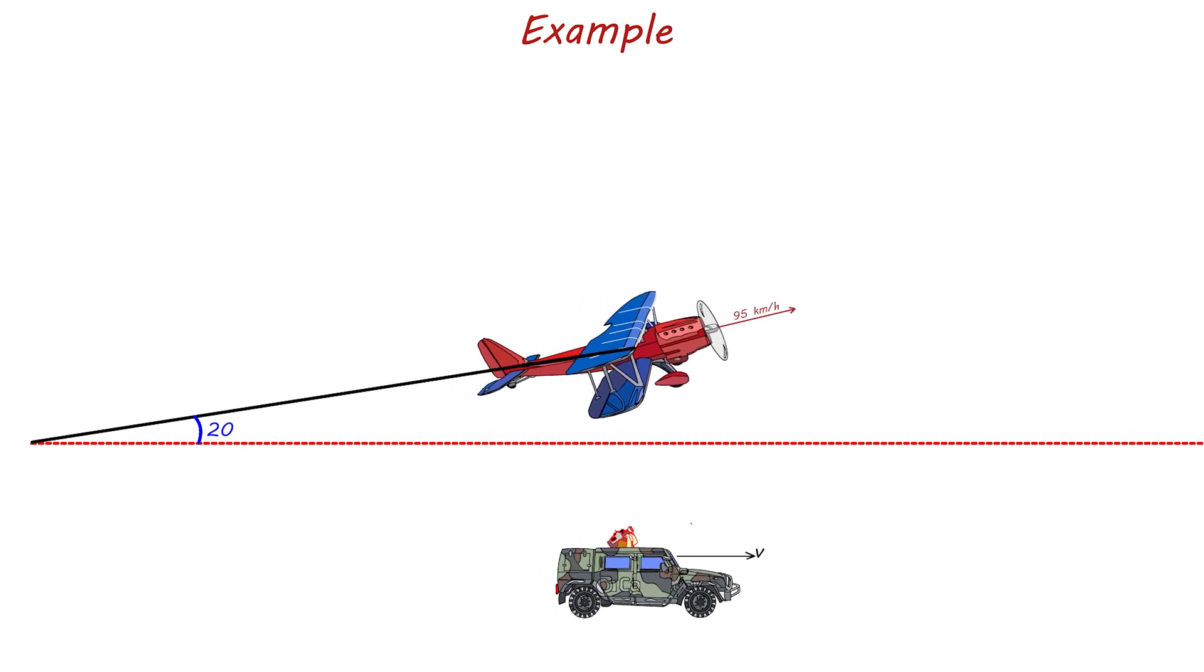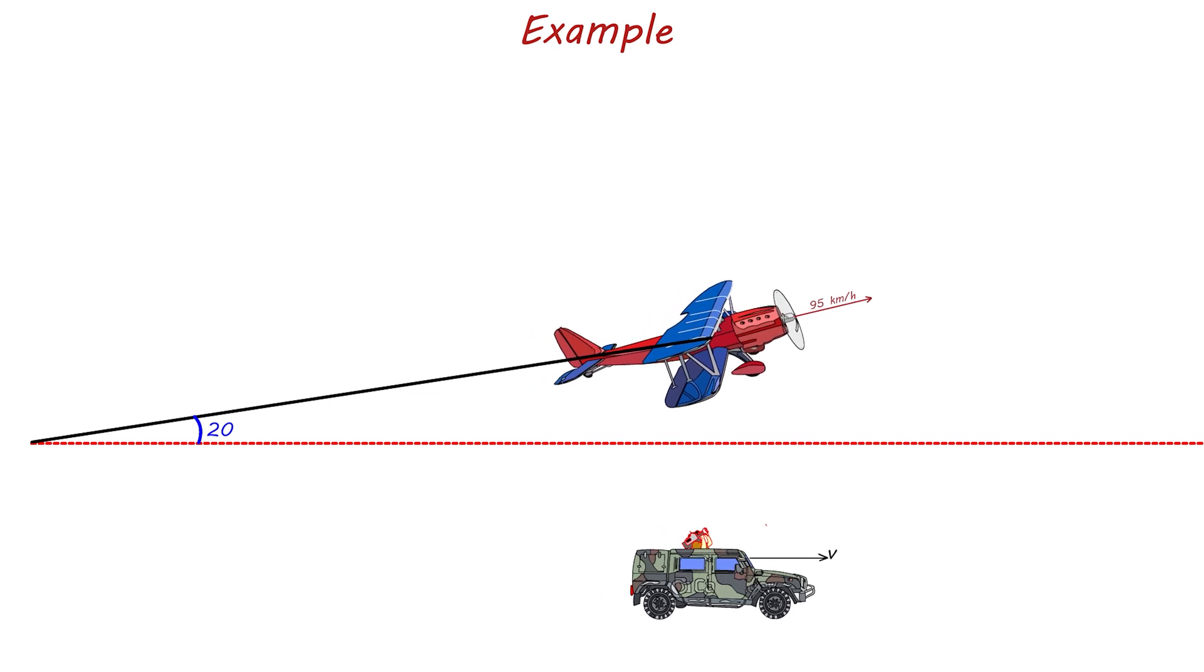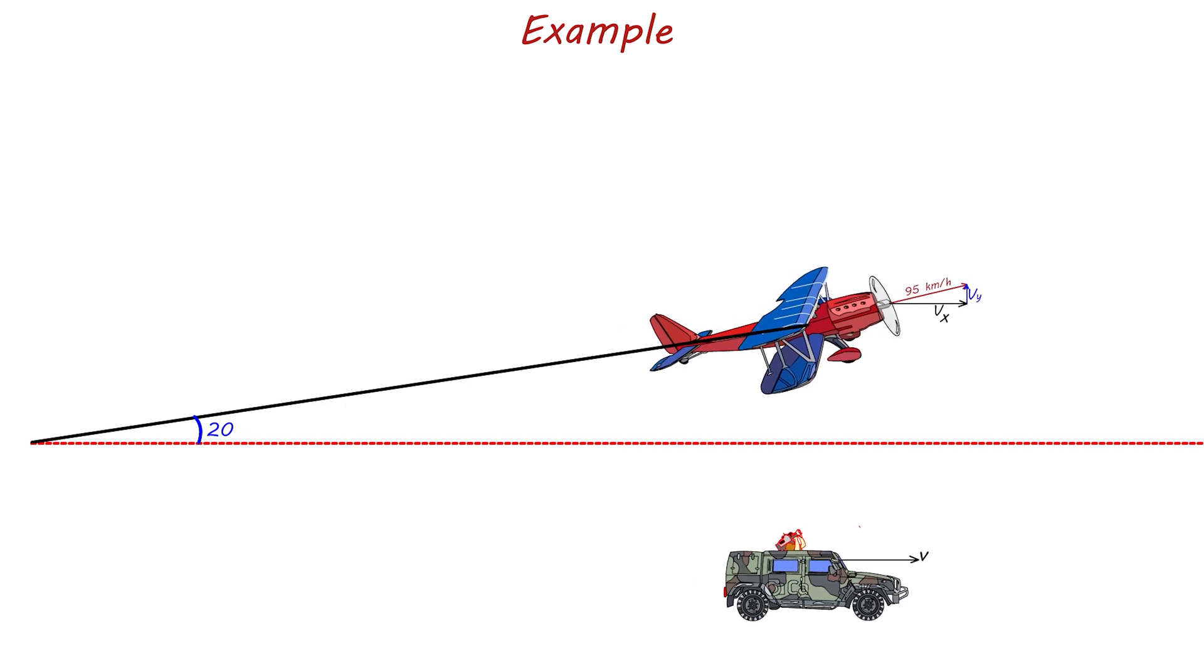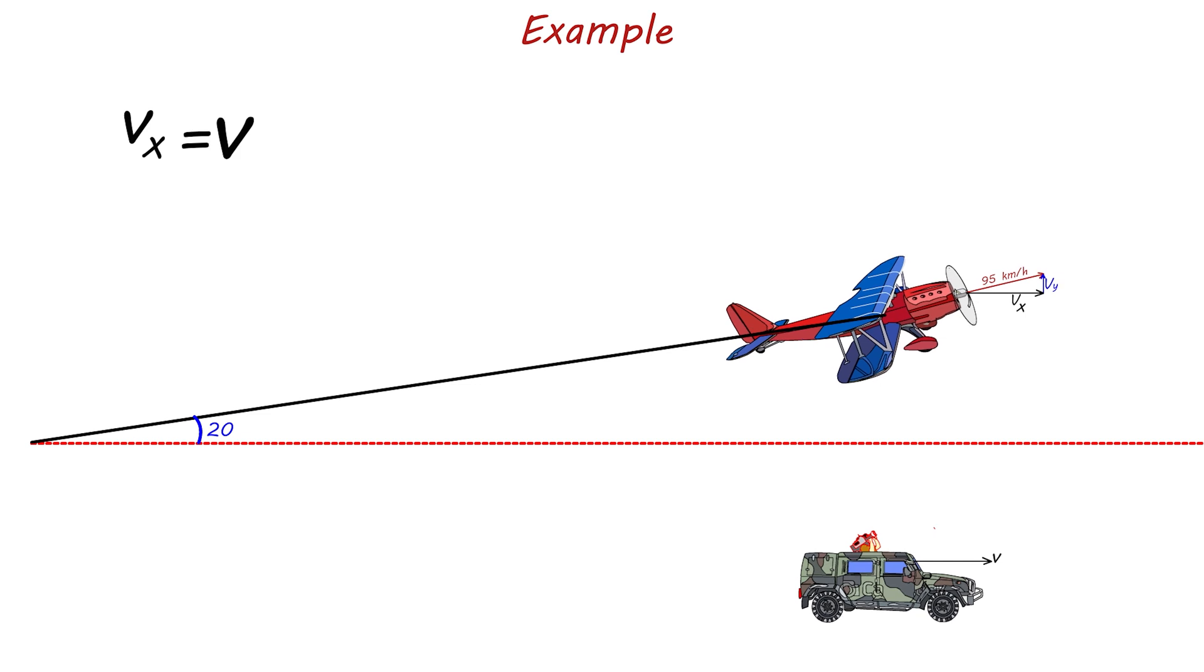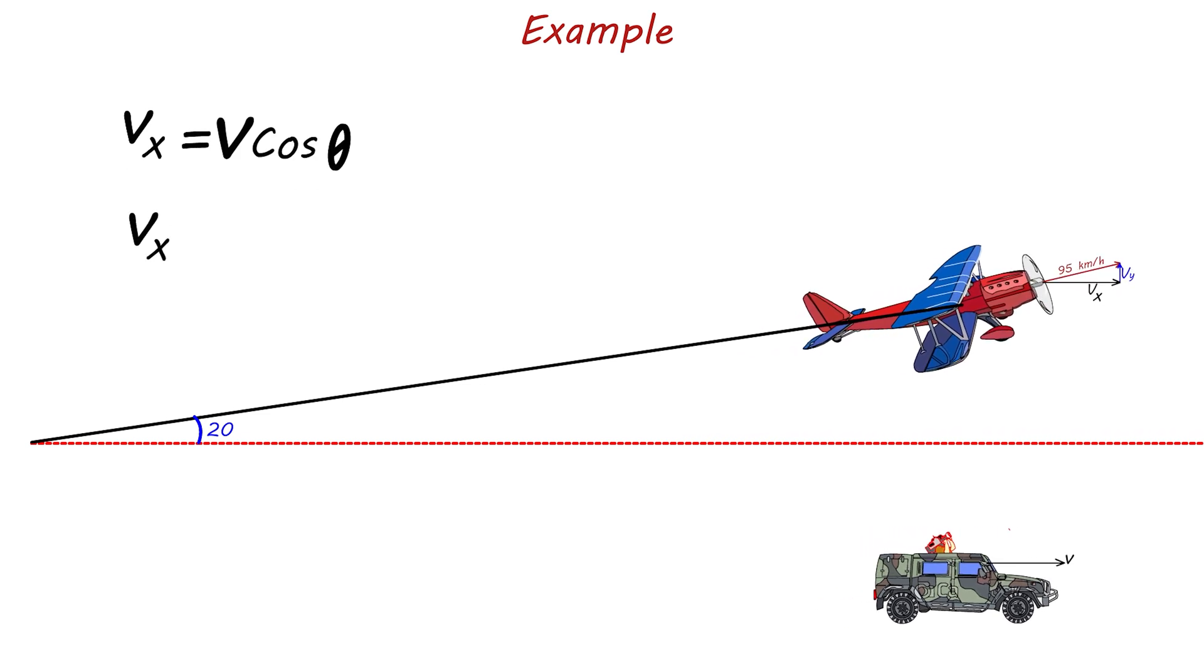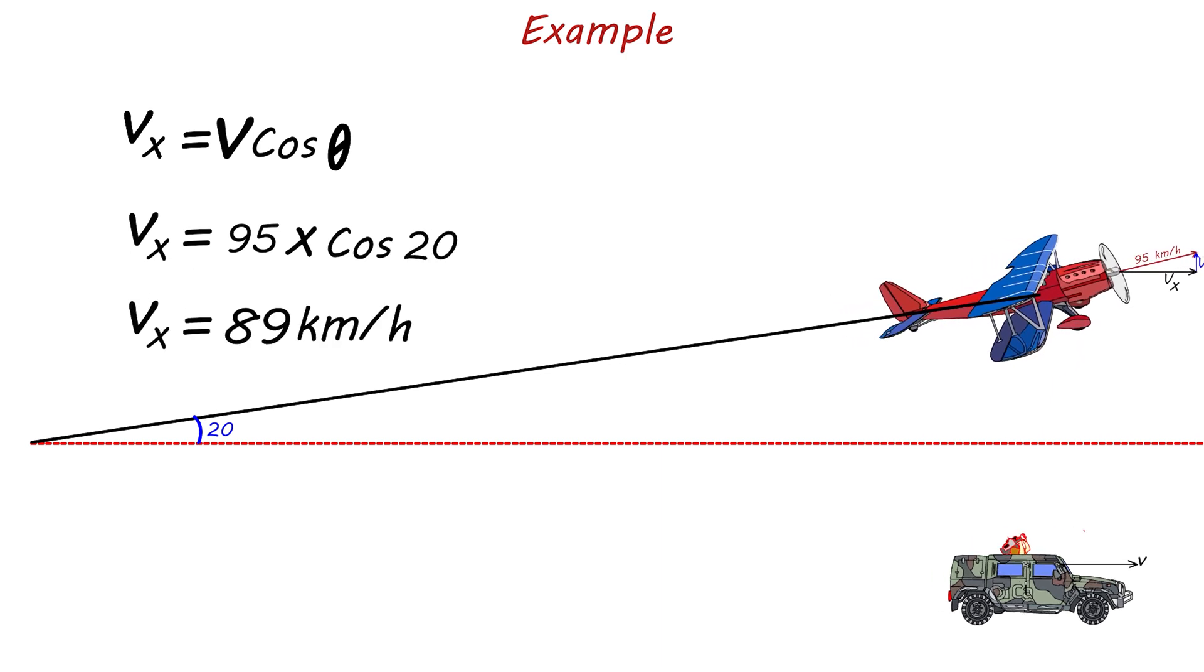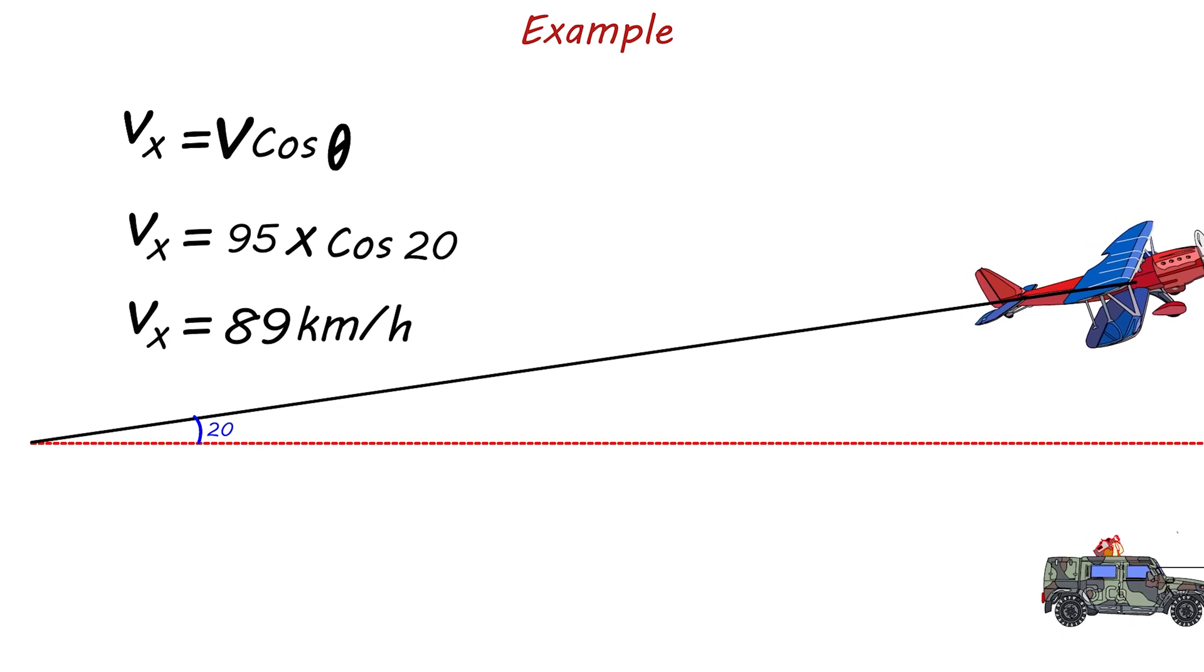Once more, the key to solving the problem is to recognize that a right triangle can be drawn using the plane's velocity and its x and y components. The plane horizontal velocity equals the x component for the plane velocity, which Vx equals v cosine theta. Substituting the values we get Vx equals 95 times cosine 20, and this equals 89. So the filming truck must move with a velocity of 89 kilometers per hour to stay beneath the plane.